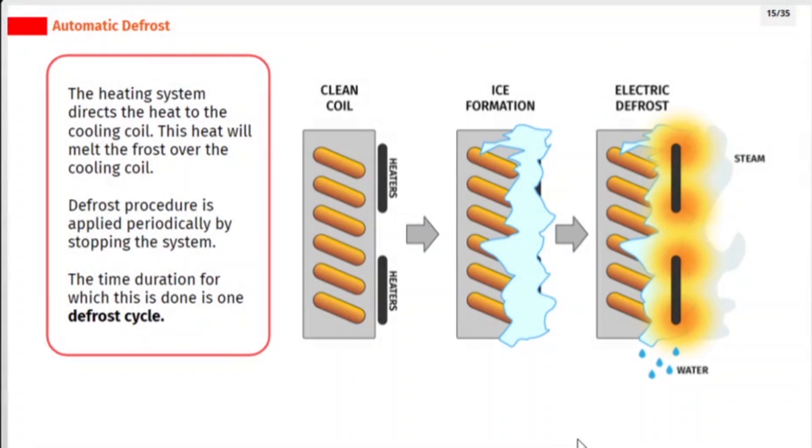The heating system directs the heat to the cooling coil. This heat will melt the frost over the cooling coil. Defrost procedure is applied periodically by stopping the system. The time duration for which this is done is one defrost cycle.